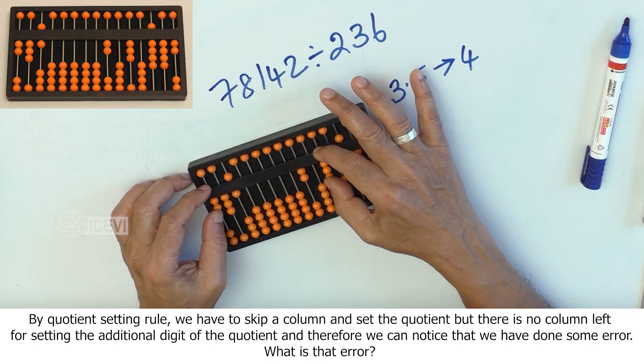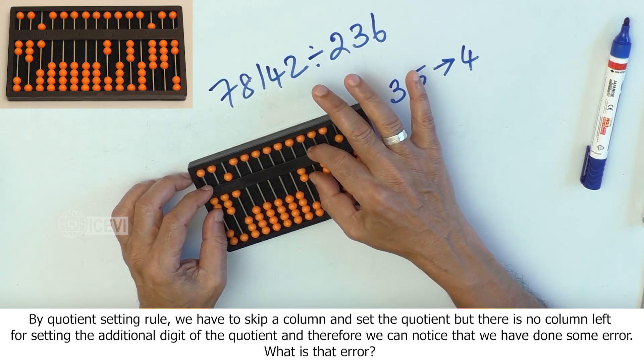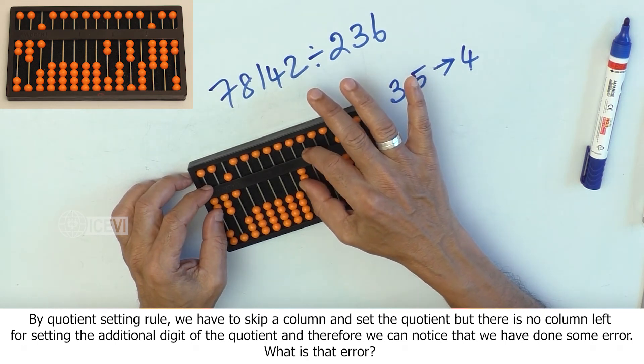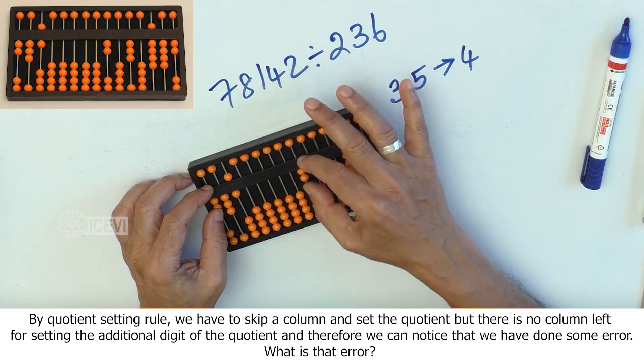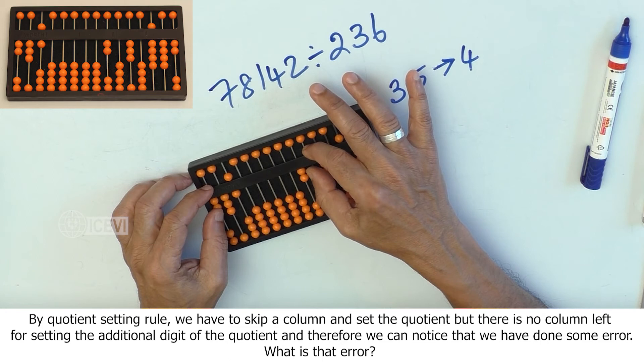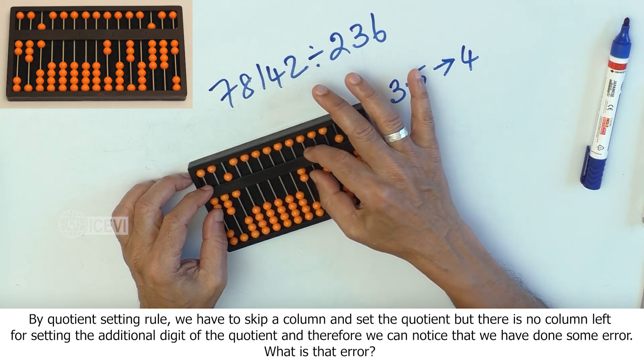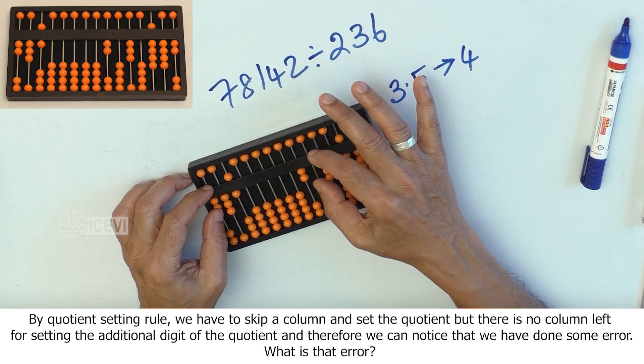By quotient setting rule, we have to skip a column and set the quotient but there is no column left for setting the additional digit of the quotient. And therefore, we can notice that we have done some error.